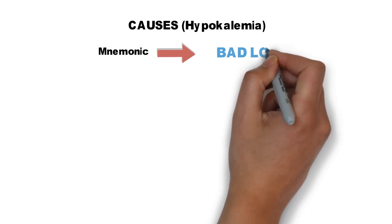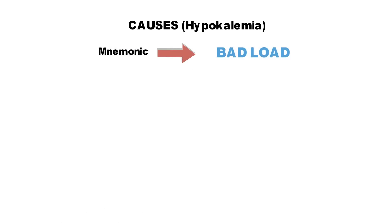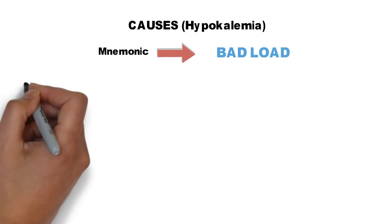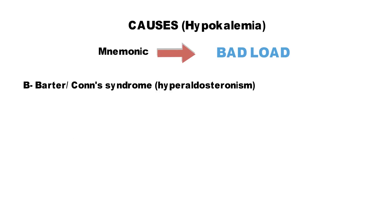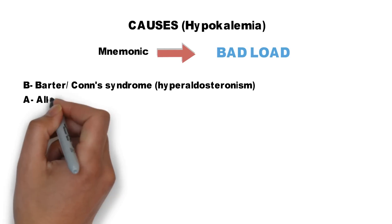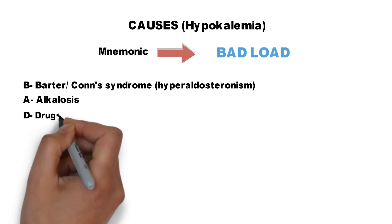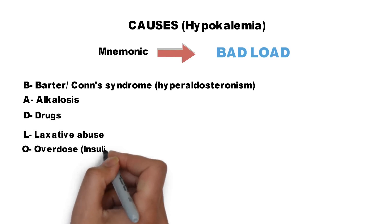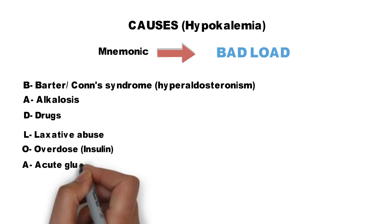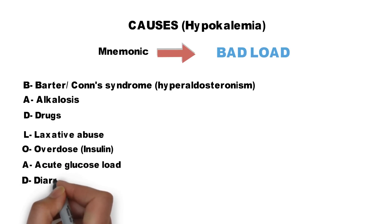Now the causes of hypokalemia, remembered by the mnemonic BAD LOAD — as decreased potassium is very bad, and while pronouncing 'load' you hear 'low'. B for Bartter or Conn syndrome — can be in hyperaldosteronism. A for alkalosis. D for drugs. L for laxative abuse. O for insulin overdose. A for acute glucose load. D for diarrhea.